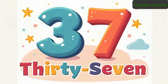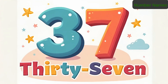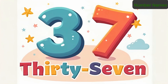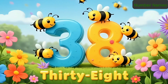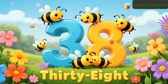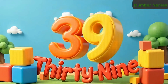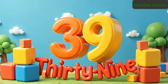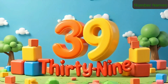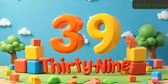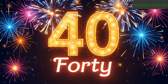THIRTY-SEVEN equals 37. THIRTY-EIGHT equals 38. THIRTY-NINE equals 39. And FORTY equals 40.